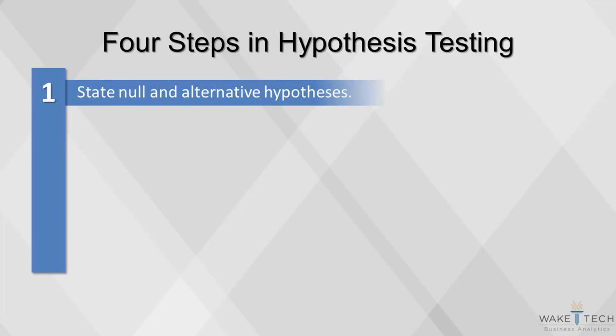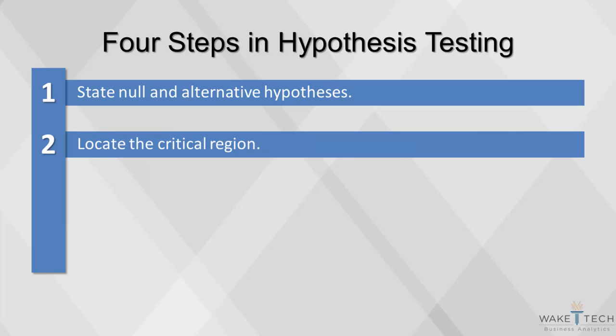The first step is stating the null and alternative hypotheses. We have to establish what we are testing to be true. Once we do that, we have to decide how close to true our sample statistic has to be for us to accept the truth. For example, we might want our estimate to be accurate with a 5% margin of error. This is called locating the critical region.